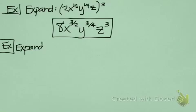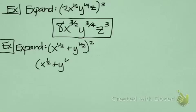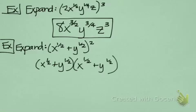Another example: expand x to the 1 half plus y to the 1 half, quantity squared. So we'll write it out. We get x to the 1 half plus y to the 1 half, times x to the 1 half plus y to the 1 half again. When we multiply that out, we get x to the 1st, because x to the 1 half times x to the 1 half — you add the powers — so you get x to the 1st power.